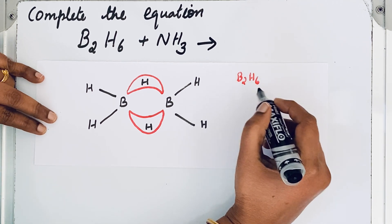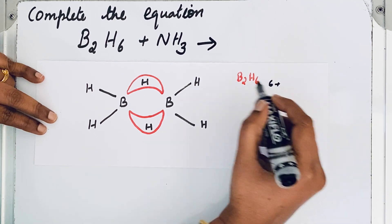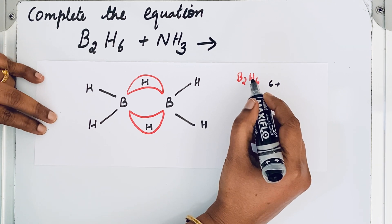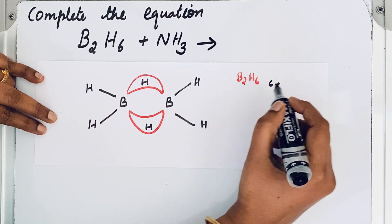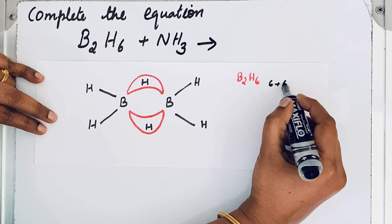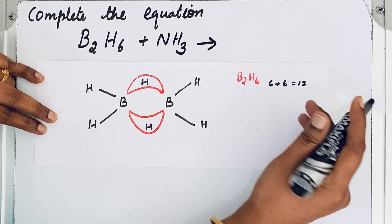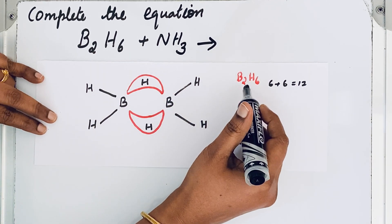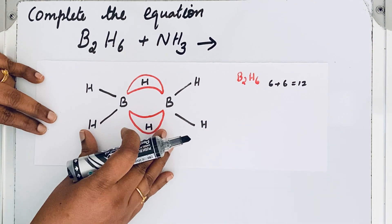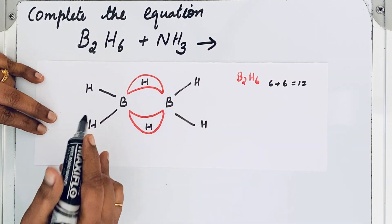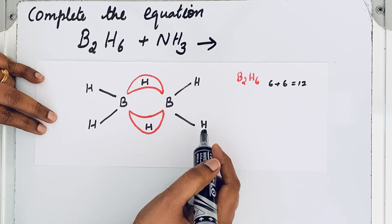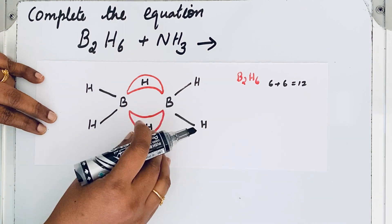Hydrogen has only one valence electron, and there are six hydrogen atoms, so one times six gives six. Six plus six gives us a total of 12 valence electrons in B₂H₆. Looking at the structure, there are four terminal hydrogen atoms, and like a bridge, two other hydrogen atoms are also present.